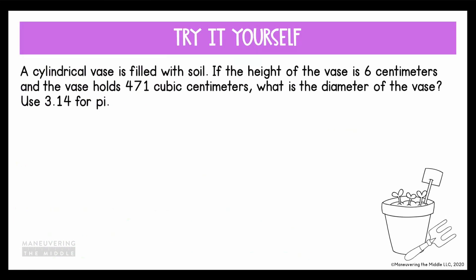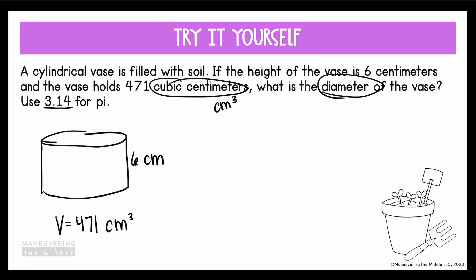Alright, for our last problem, it tells us the cylindrical vase is filled with soil. If the height of the vase is 6 centimeters and the vase holds 471 cubic centimeters, what is the diameter of the vase? This time use 3.14 for pi. So again, let's draw what we know. The vase is a cylinder. The height is 6 centimeters. And then it holds 471 cubic centimeters. So that's an indicator that they're giving us our volume. It holds 471 cubic centimeters. The question is asking for the diameter, so I'm gonna label that we're looking for D. We're gonna start the same way, which is by writing the formula. So when in doubt, write down the formula.